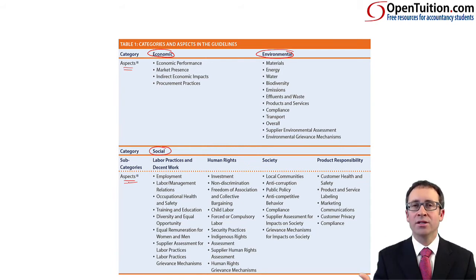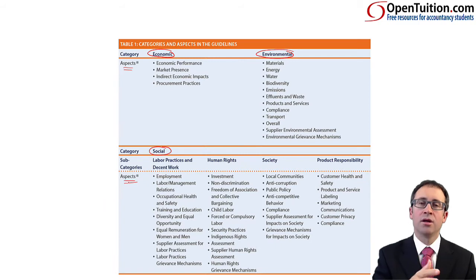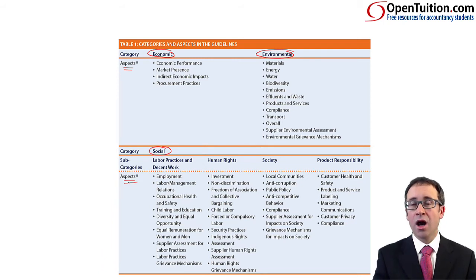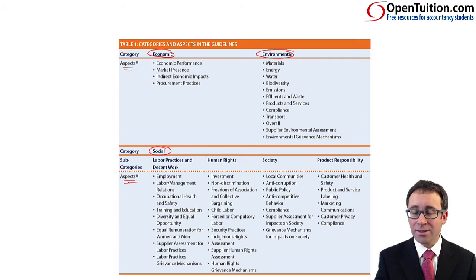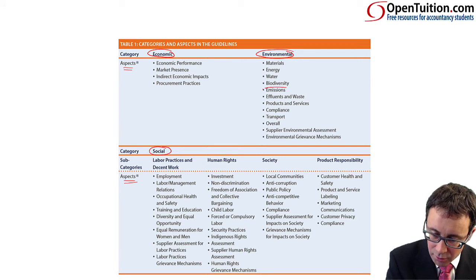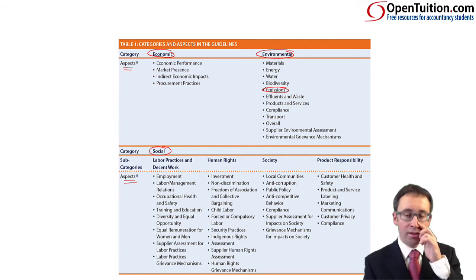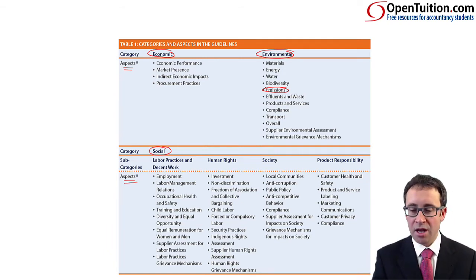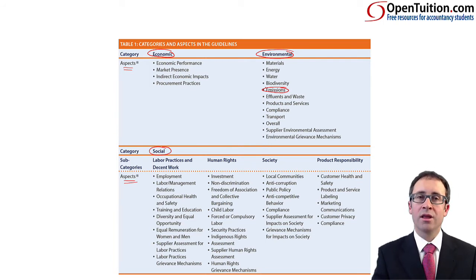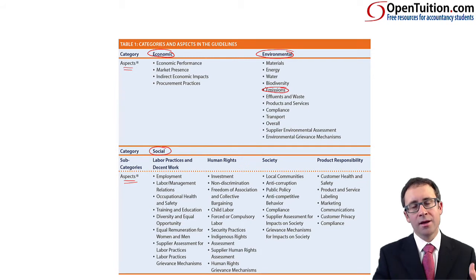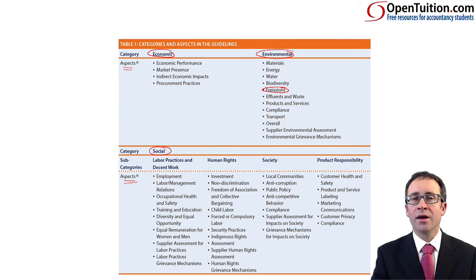It's much more of an application question — giving you a scenario in the exam and asking which aspects would relate to this type of business. For example, a car manufacturing business: you would need to look at what aspects are material with regards to economic, environmental and social. For environmental aspects, one of the key ones for car manufacturers or car production would be emissions. Biodiversity and water wouldn't be such an issue, but maybe materials and energy — in terms of what materials are used, whether they can be recycled, whether they are environmentally friendly, and the amount of energy consumed in manufacturing that car.